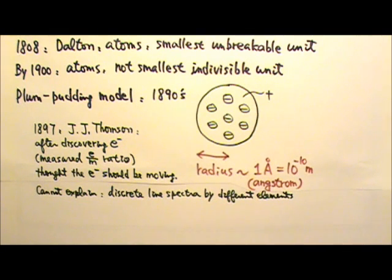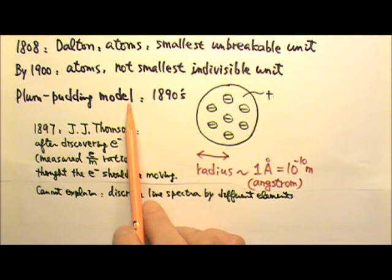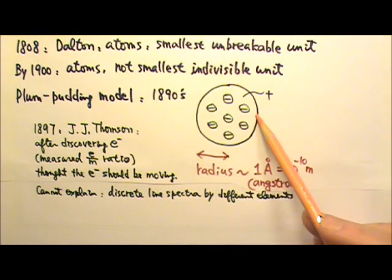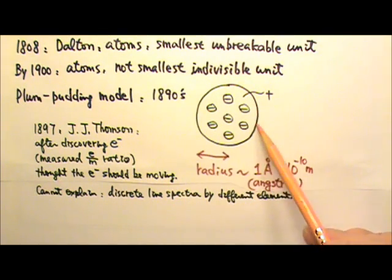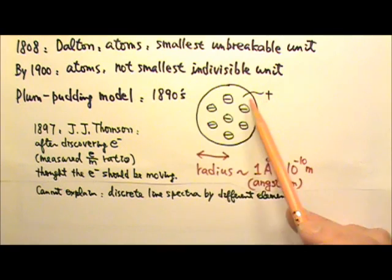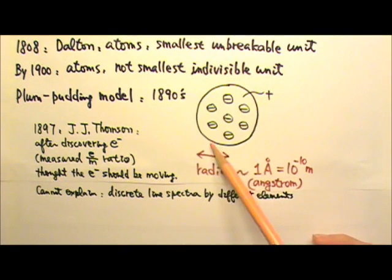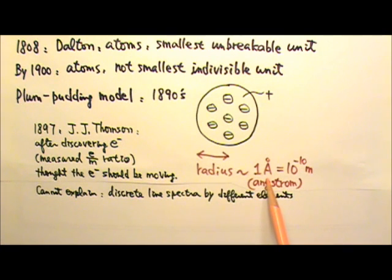There were many atom models around, but the Plum-Pudding model was the most promising. According to the Plum-Pudding model, the mass of the atom and the positive charges are evenly distributed in a sphere with radius around 1 angstrom. An angstrom is 10 to the negative 10th meter.